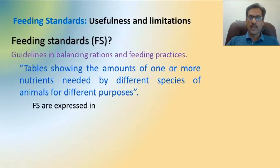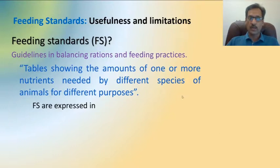Information about nutrient requirements of an animal can be obtained from feeding standards. Feeding standards are simply the guidelines in balancing ration and feeding practices. They are available in the form of a booklet, simply in the form of a table showing the amount of one or more nutrients needed by different species of animal for different purposes.